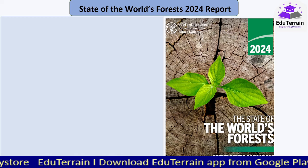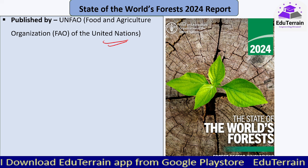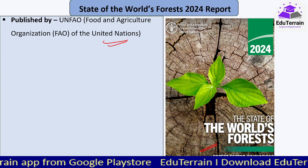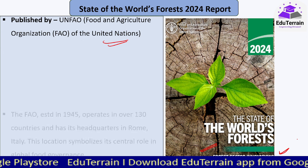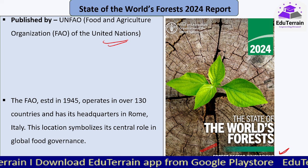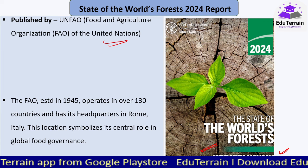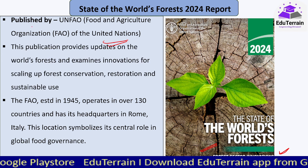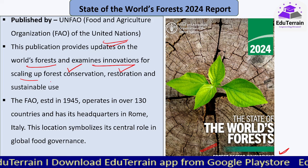The State of the World's Forests 2024 report has been published by the United Nations Food and Agriculture Organization, that is FAO. The theme or focal point for this report is 'Forest Sector Innovations Towards a More Sustainable Future.' FAO was established in 1945, currently operates in over 130 countries, and has its headquarters in Rome, Italy. It performs a central role in global food governance. This publication provides updates on the world's forests and examines innovations for scaling up forest conservation, restoration, and sustainable use.